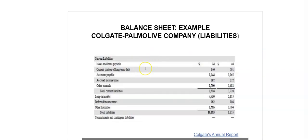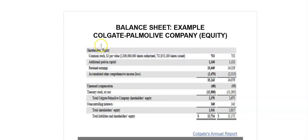Here we have the liabilities of Colgate-Palmolive as on 31st December 2011. Liabilities are generally similar for most companies across different industries, though there may be variations specific to an industry or company. Banks and other financial institutions, for example, will have a significantly higher amount of liabilities relative to a manufacturing company such as Colgate-Palmolive.